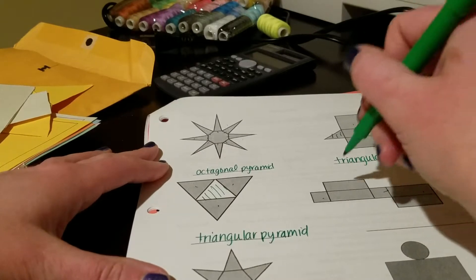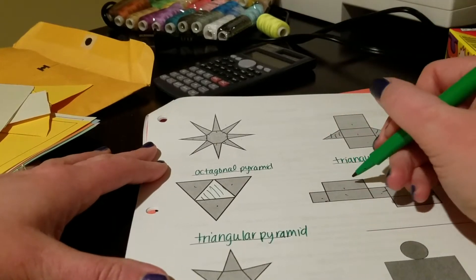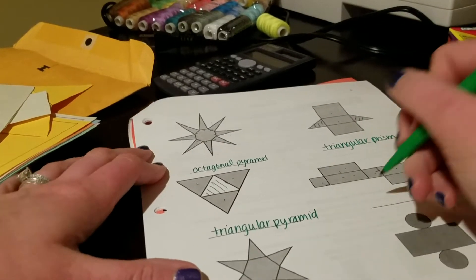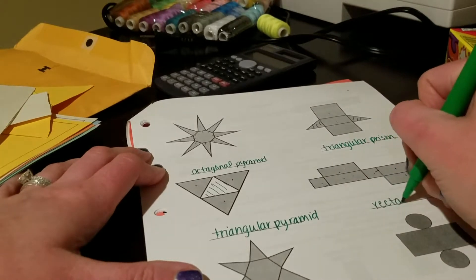This one has the two rectangles. They're on either side of a rectangle, which is good. Two more, so this is a rectangular prism.